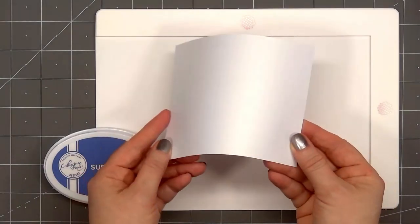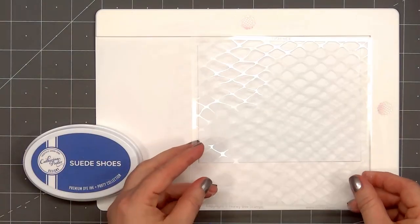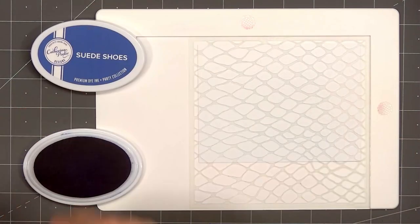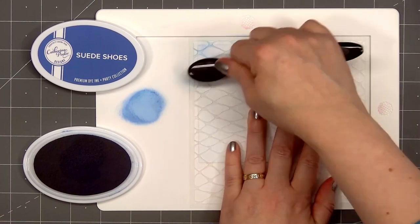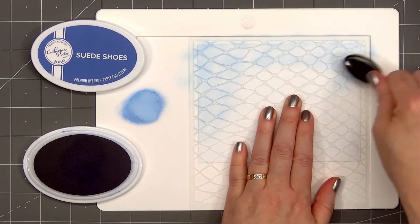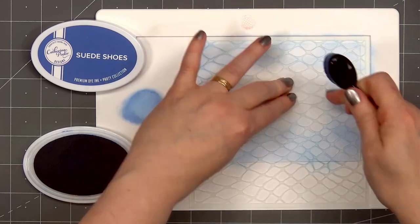I'll start off by using the Fishnet Stencil. I have a piece of white shimmer cardstock in a mini stencil mat. The ink color I'm using is by Catherine Pooler. This is Suede Shoes. And I'm adding ink just to the very outside edge since I will be covering up the center of this panel.